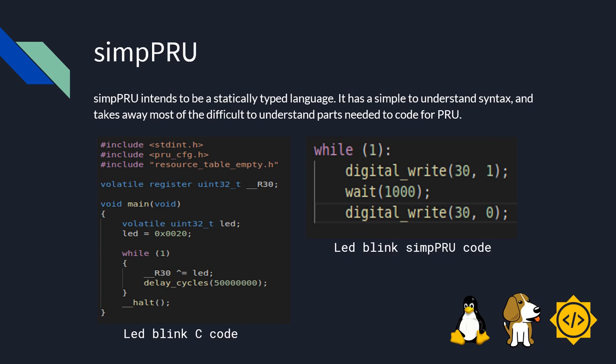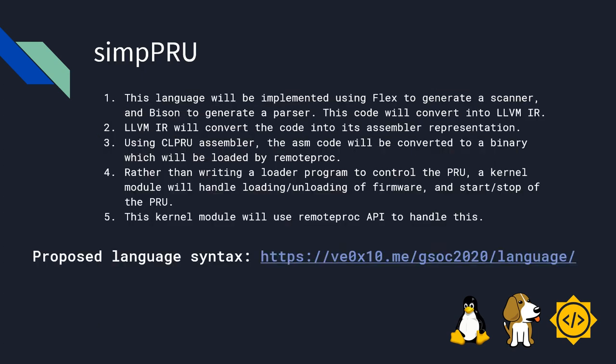Now coming to the implementation part. This language will be implemented using Flex to generate a scanner and Bison to generate a parser. This code will convert into LLVM intermediate representation language. LLVM will convert the code into its assembler representation. Using the CLPRU assembler, the ASM code will be converted to a binary which will be loaded by remote proc. Rather than writing a loader program to control the PRU, a kernel module will handle loading and unloading of firmware and starting, stopping, or resuming the PRU. This kernel module will use remote proc APIs in the backend to handle this.